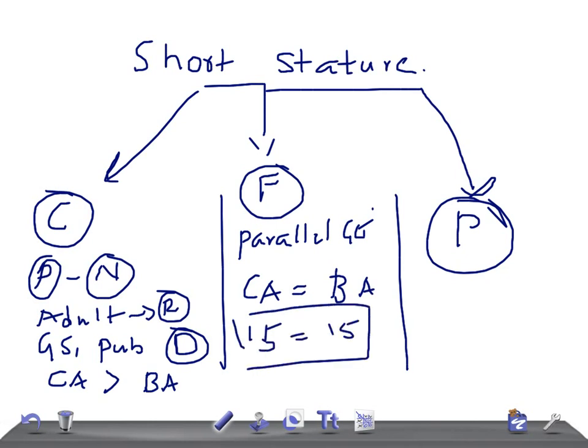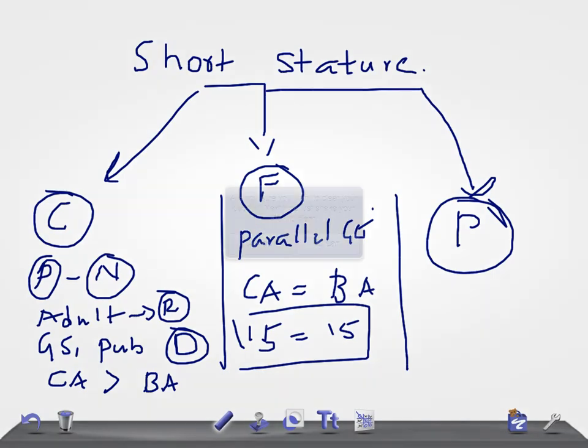Whereas in pathologic short stature, the patient may start out in the normal range initially, then start crossing growth percentiles. Different diagnoses include craniopharyngioma, hypothyroidism, and hypopituitarism. Let me put this in a table form.